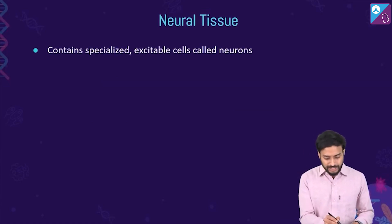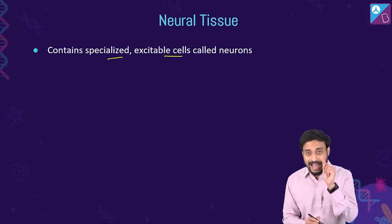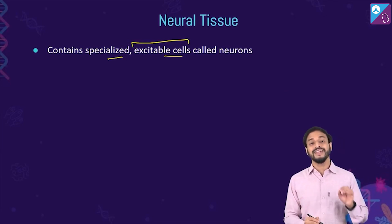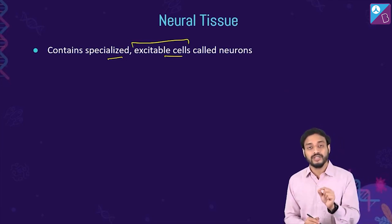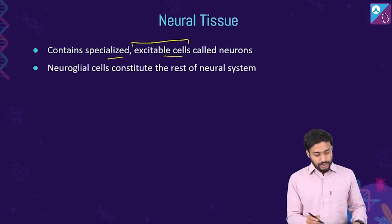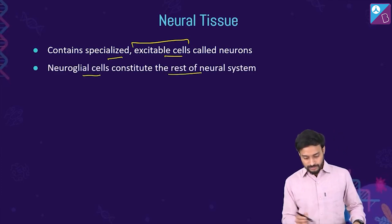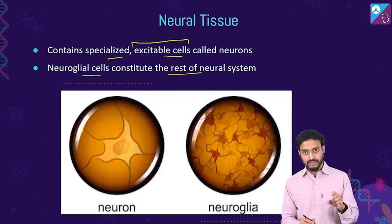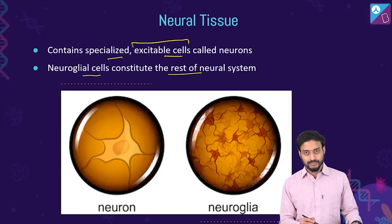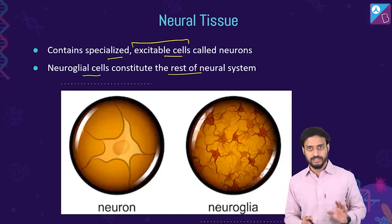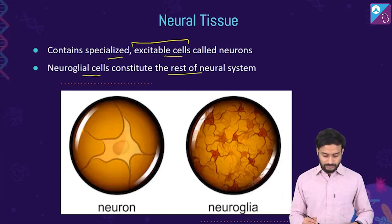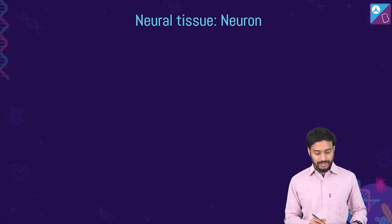Neural tissue contains specialized excitable cells called neurons — these cells can be excited and transmit electrical impulses. Glial cells constitute the rest of the neural system and are supportive in function.